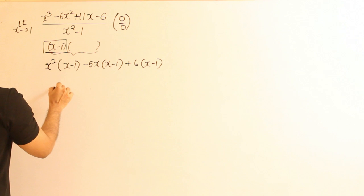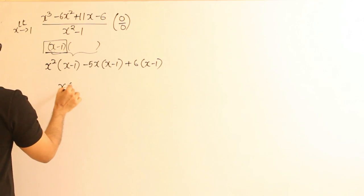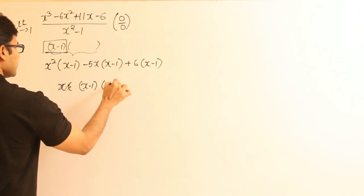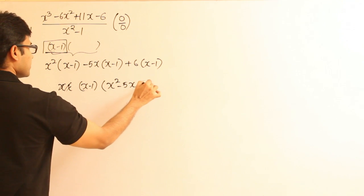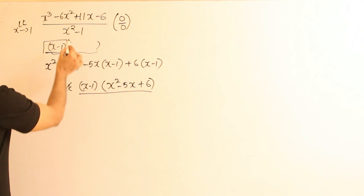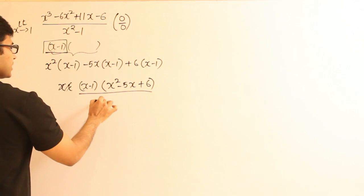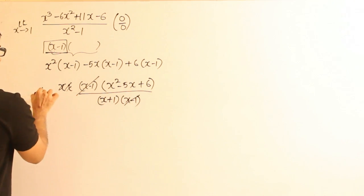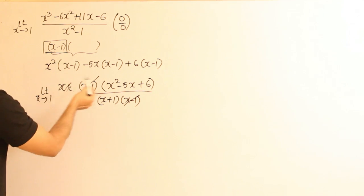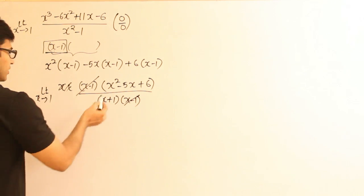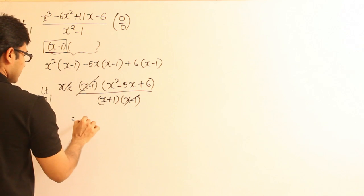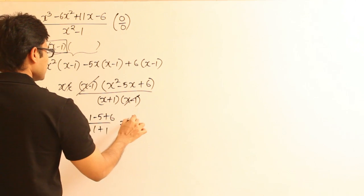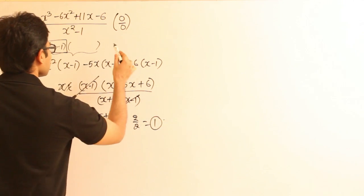So I can pull out (x minus 1) and write the remaining terms as x² minus 5x plus 6, divided by the denominator. Writing x² minus 1 as (x plus 1)(x minus 1), we can now cancel out the (x minus 1) terms. Applying limit x tends to 1 and substituting 1, we get 1 minus 5 plus 6 divided by 1 plus 1, which is 2 divided by 2, which equals 1. Therefore the answer is 1.